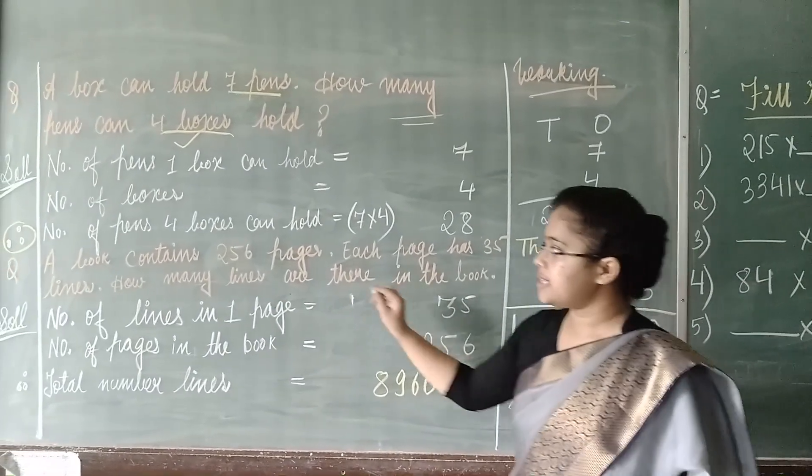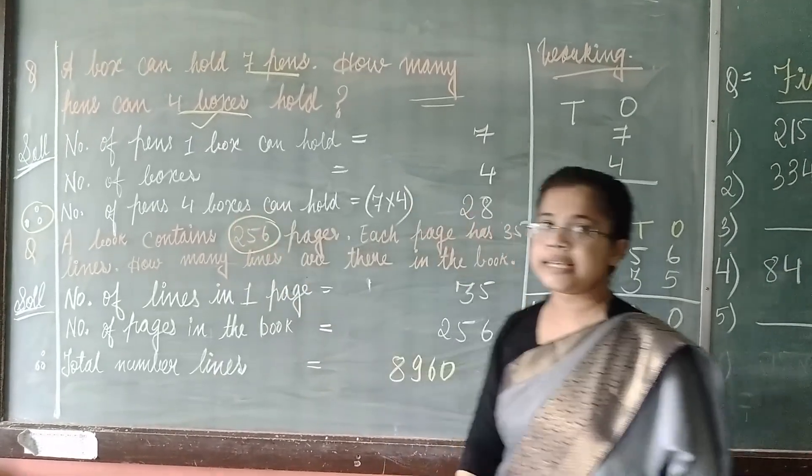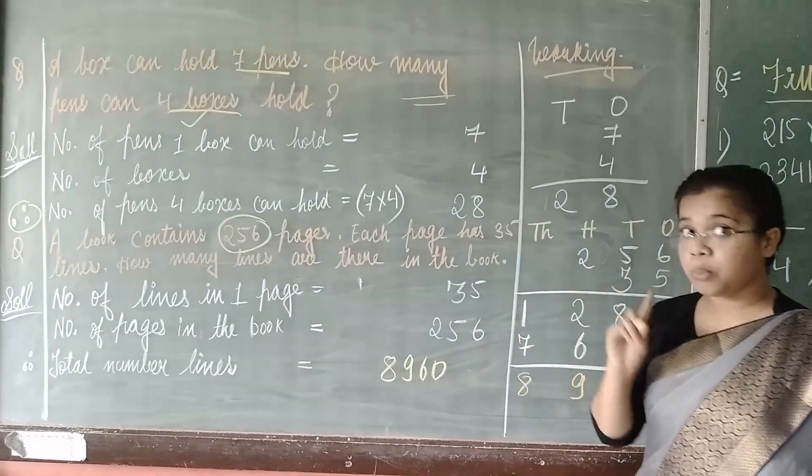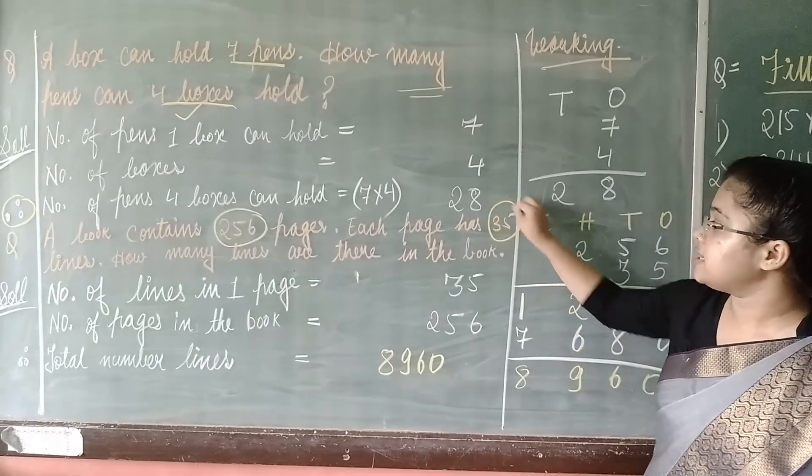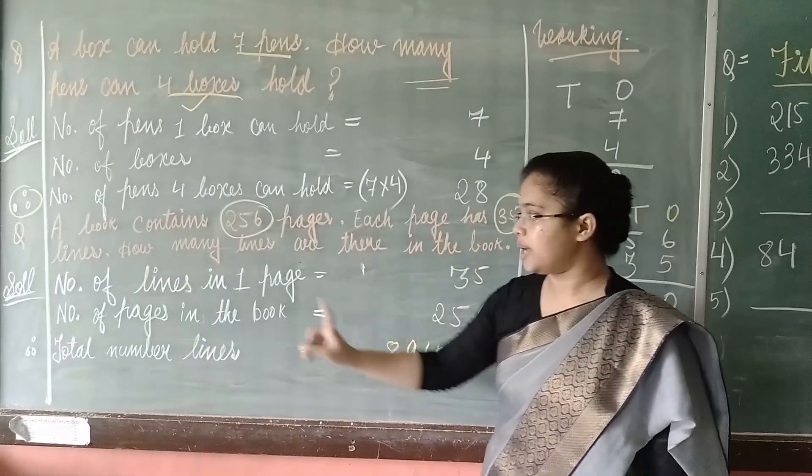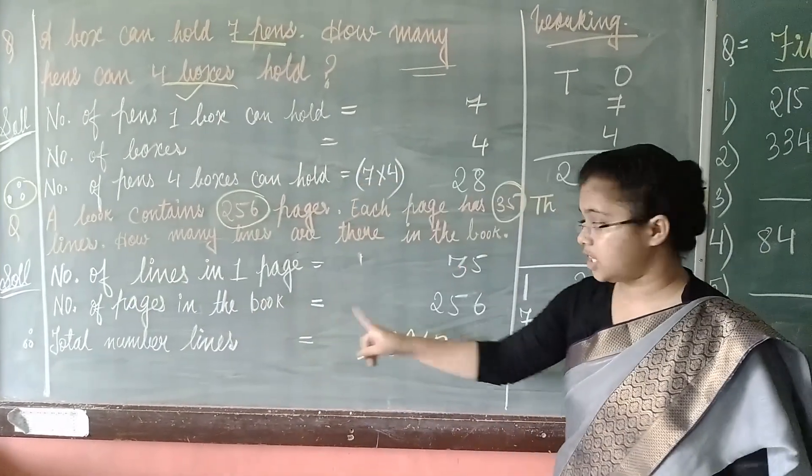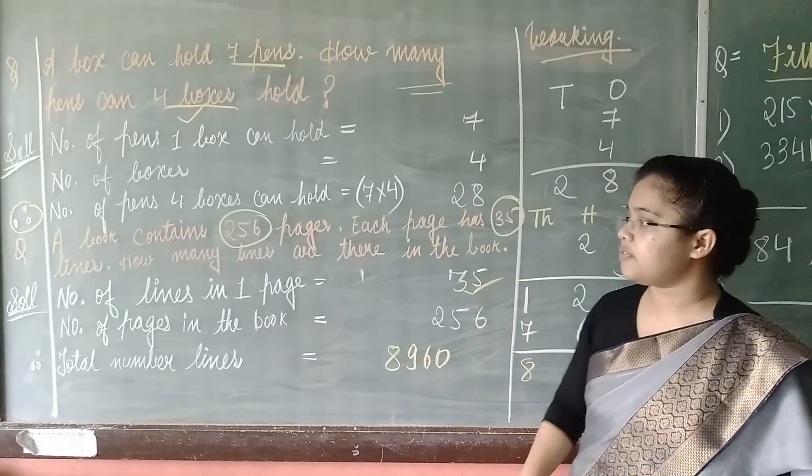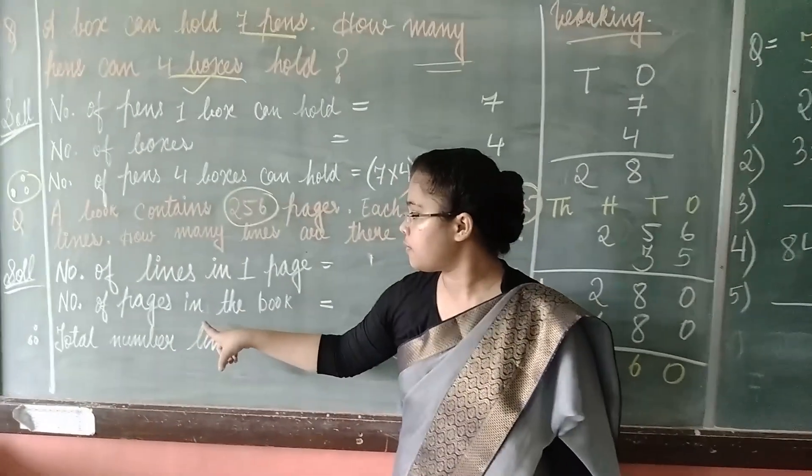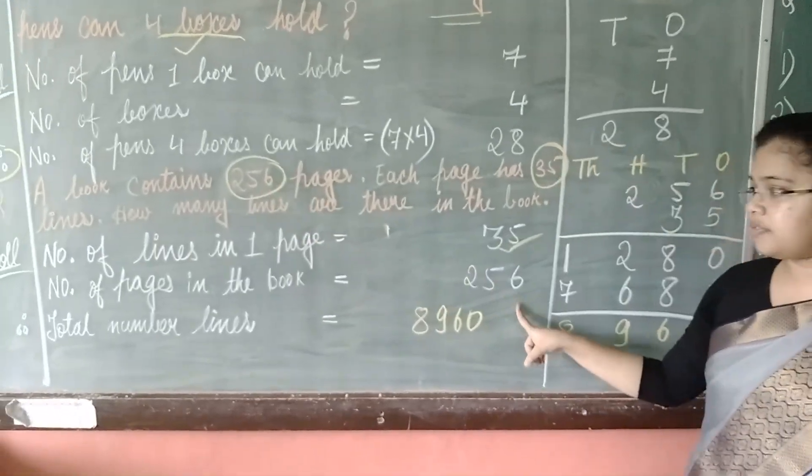So, the question says that in a book, there are 256 pages. And in one page, there are 35 lines. So, first statement will be, number of lines in one page, that is 35. Number of pages in the book, 256.